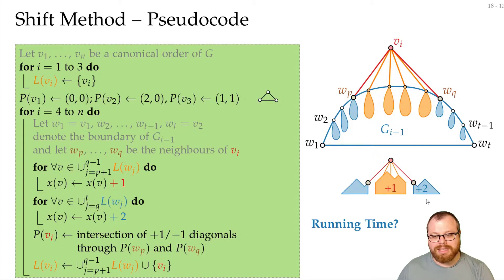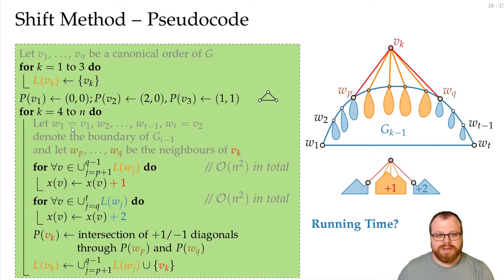All the vertices in here, that also might be linearly many. So it can happen that in total we need quadratic time here. So that means that the whole algorithm runs in quadratic time.